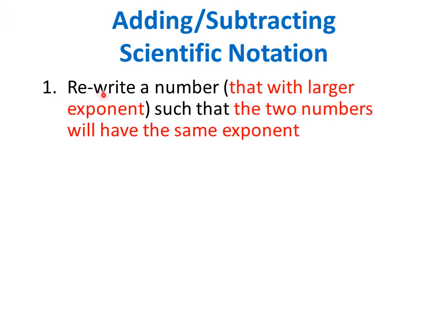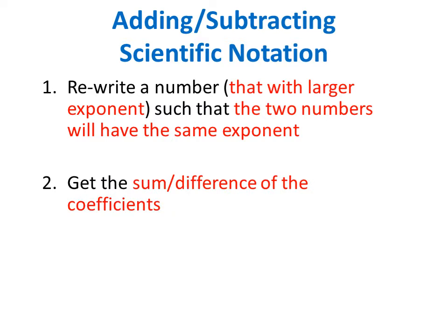First, if the numbers have different exponents of 10, we have to rewrite a number — that is, the number with the larger exponent — such that the two numbers will have the same exponent. Once they have the same exponent of 10, we can get the sum or difference of the coefficients, just the coefficients, depending on the operation.